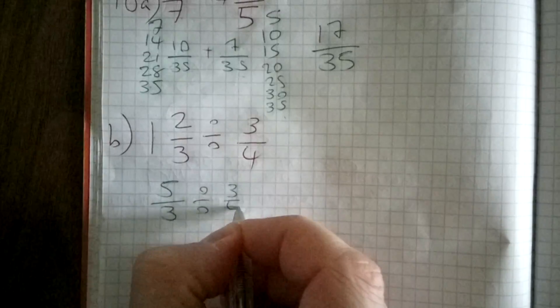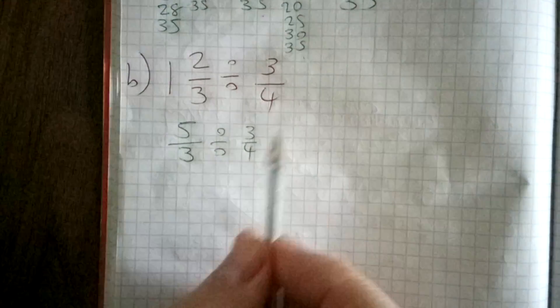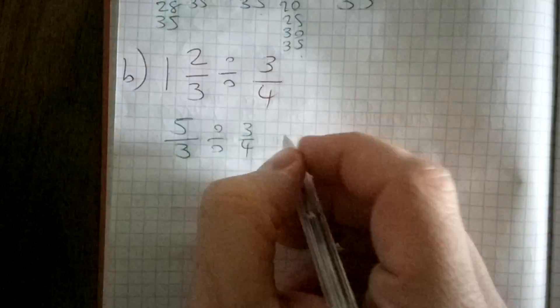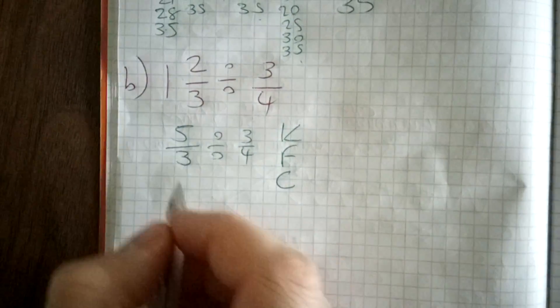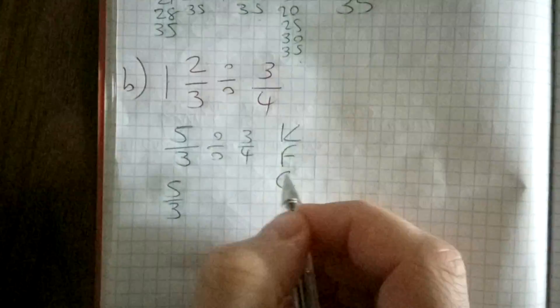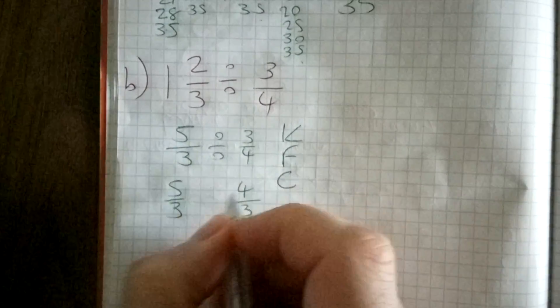When you're dealing with dividing fractions, you keep the first one—keep it as 5/3—you flip the second one, which makes it 4/3, and you change the division sign to multiplication.